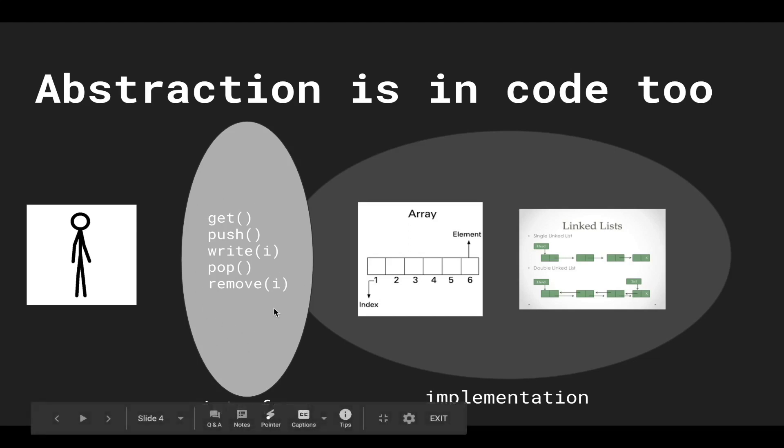You know that your list has these methods. That's all you know about. That's all you care. You only care about the interface, and the way we can implement that interface of a list is with data structures, like an array and linked lists. So this is the separation between what an abstract data type is and a data structure.